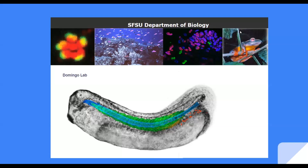Hello, my name is Salvador Alvarado, and I'm a member of the Carmen Domingo Lab at San Francisco State University, where we study how cells acquire specific cell fates and morphologies during embryonic development.